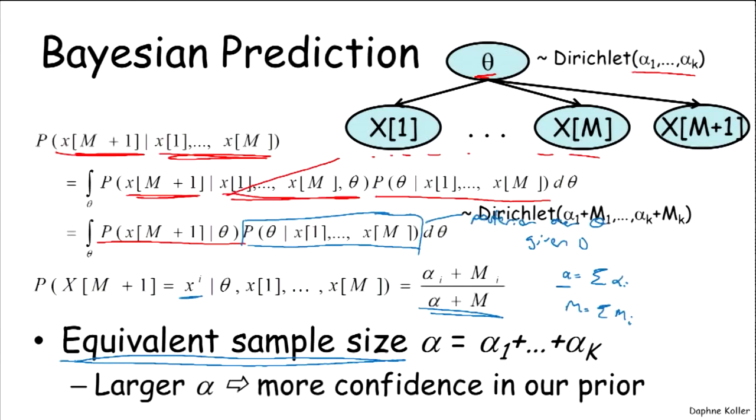Now look what happens. If we multiply alpha by a constant, so say we double all of our alpha i's, then we're going to let the mi's affect our estimate a lot less than for smaller values of alpha.